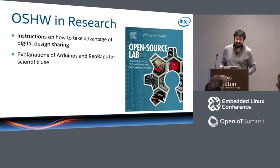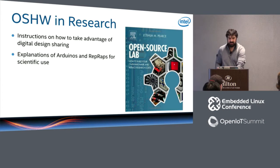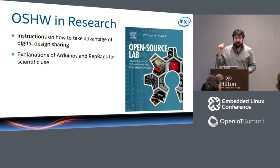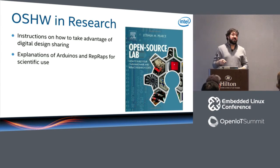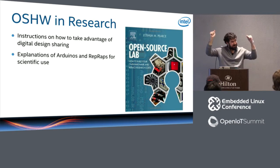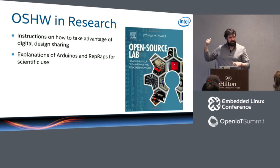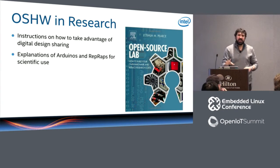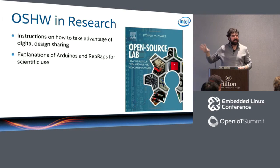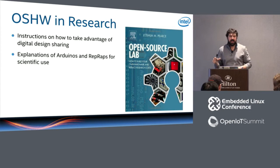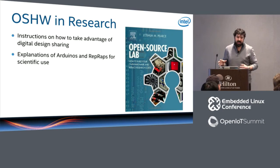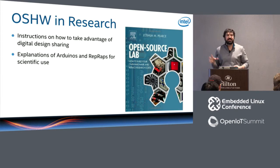Open Source Lab is a book by Joshua Pierce, a professor at Michigan Tech. I highly recommend it. He talks about how to take advantage of digital design sharing, specifically using things like Arduinos and RepRaps — RepRaps are just 3D printers. The idea is to take advantage of whatever's at your disposal to solve the problem you need to solve. One thing I noticed at the university hospital was that a lot of tools I needed were needlessly expensive.